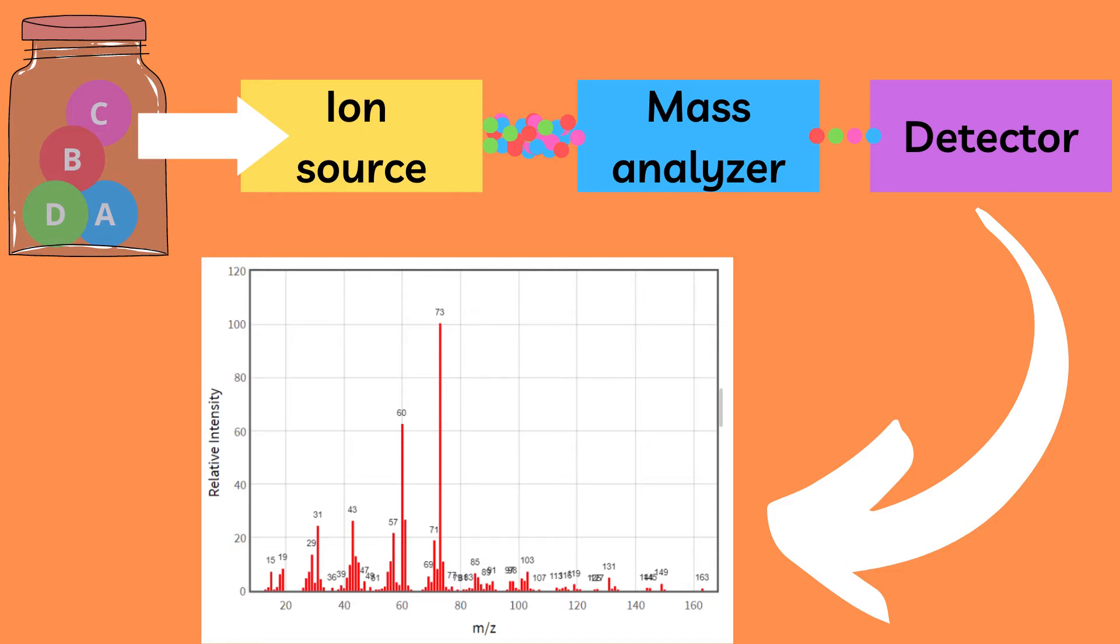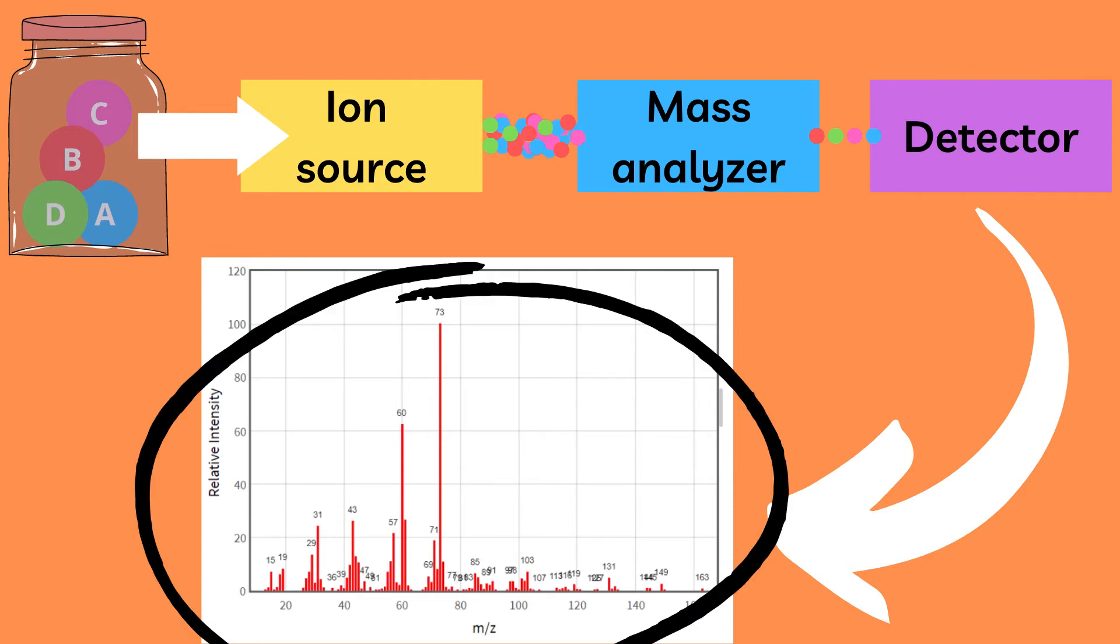Broadly speaking, the three major components of any mass spectrometry device are: one, an ion source which ionizes the sample; two, a mass analyzer that measures the mass-to-charge ratio; and three, a detector which converts the detected ions into a digital output.